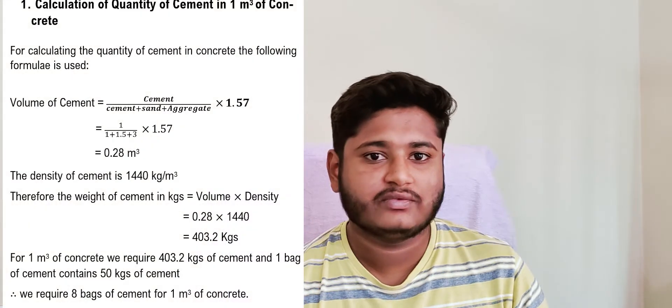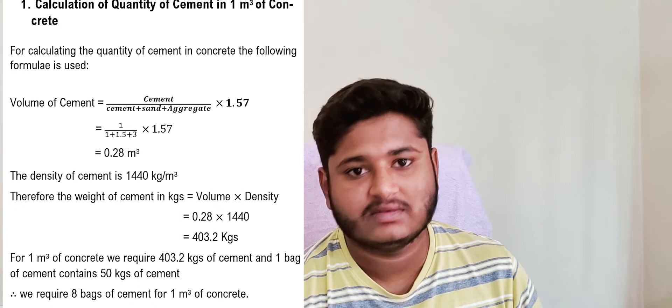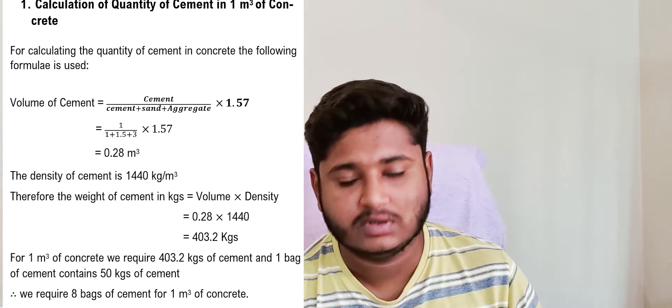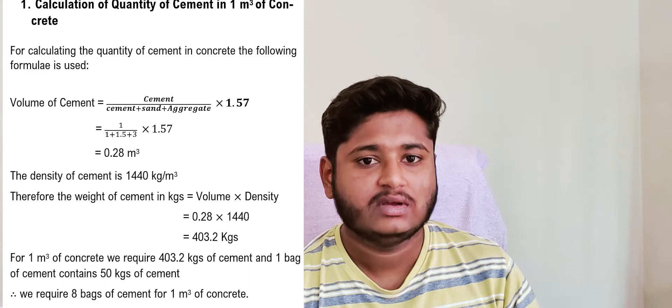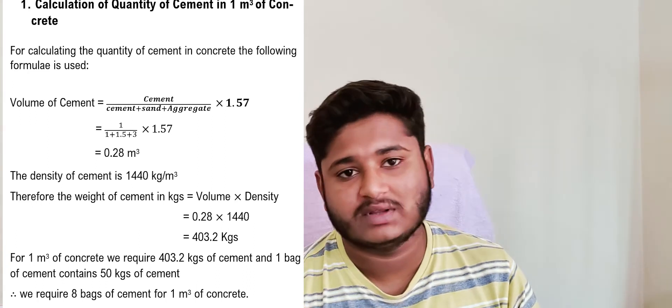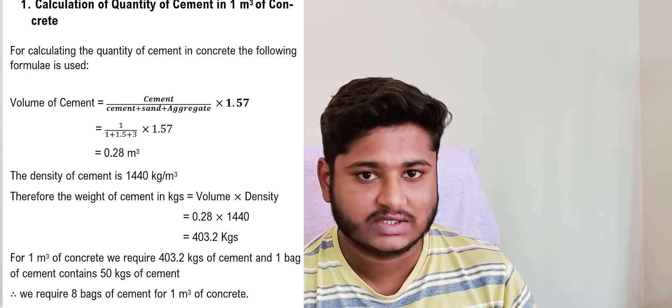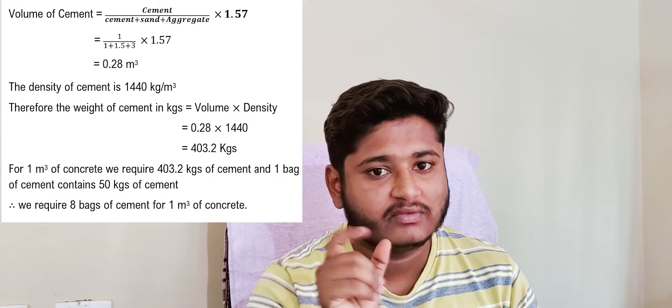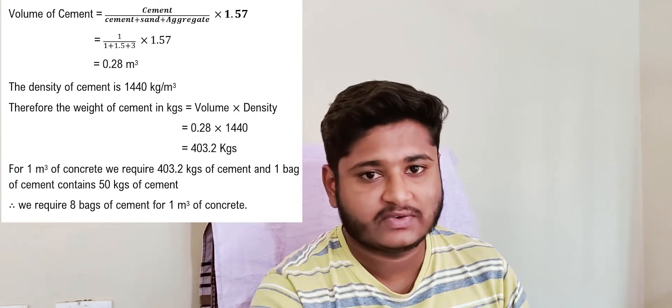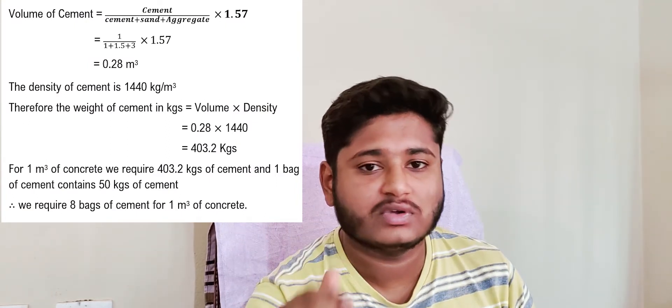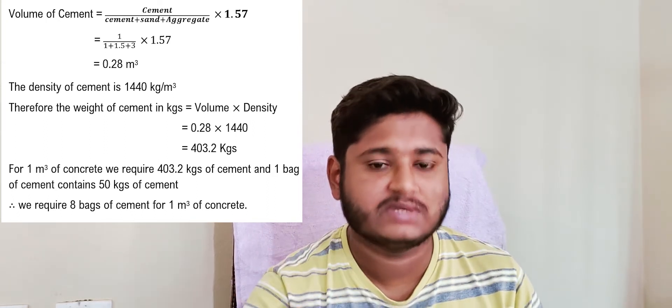To calculate the weight of cement, we multiply the volume by the density of cement, which is 1440 kg per cubic meter. So, 0.28 × 1440 = 403.2 kg. For 1 cubic meter of concrete, we require 403.2 kg of cement. Since one bag contains 50 kg, dividing 403.2 by 50 gives us 8 bags of cement.